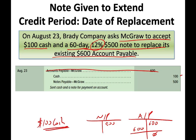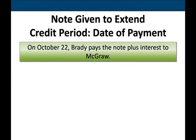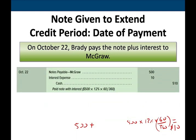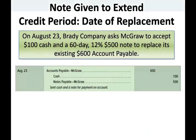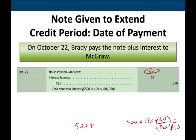For the note, we have to pay principal plus interest. On October 22nd, we pay: $500 × 12% × 60/360 — always do the fraction first — which equals $10 of interest. Therefore, we debit notes payable $500, debit interest expense $10, and credit cash $510. We replaced an accounts payable with a note, then paid the note plus interest.